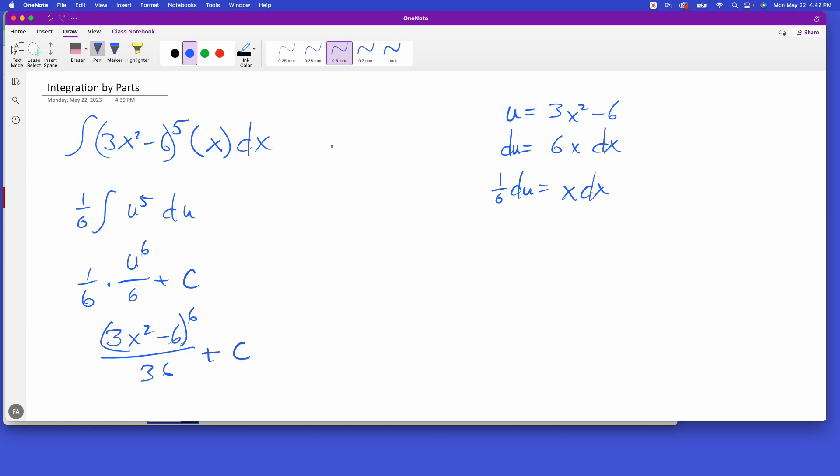Now, why did that work? Why were we able to use a u substitution there? Well, we were able to do that because the derivative of this piece right here on the interior matches the exterior piece. So the derivative of the interior piece matched the exterior piece. So that's why that worked that way for us.